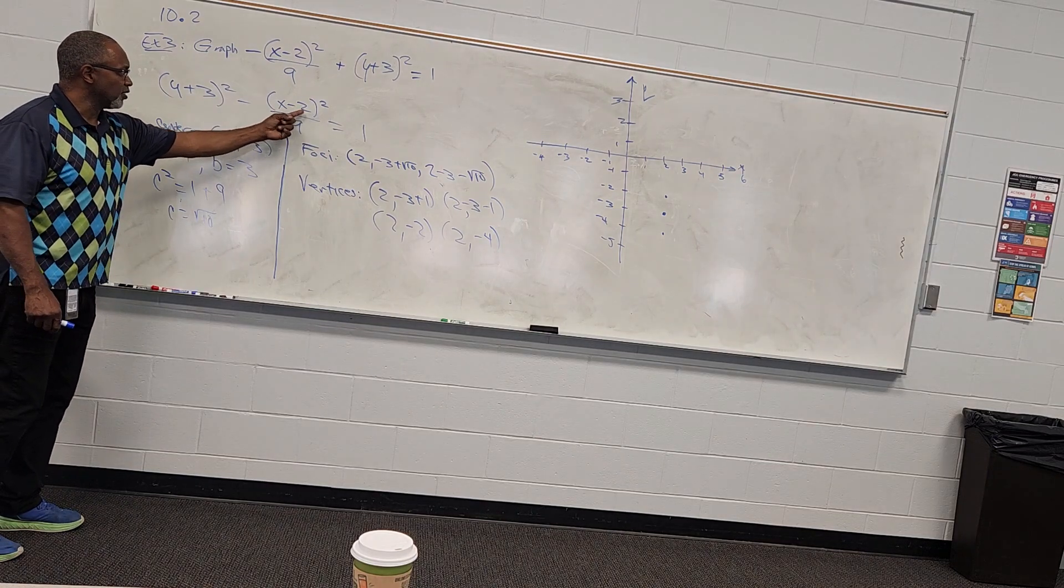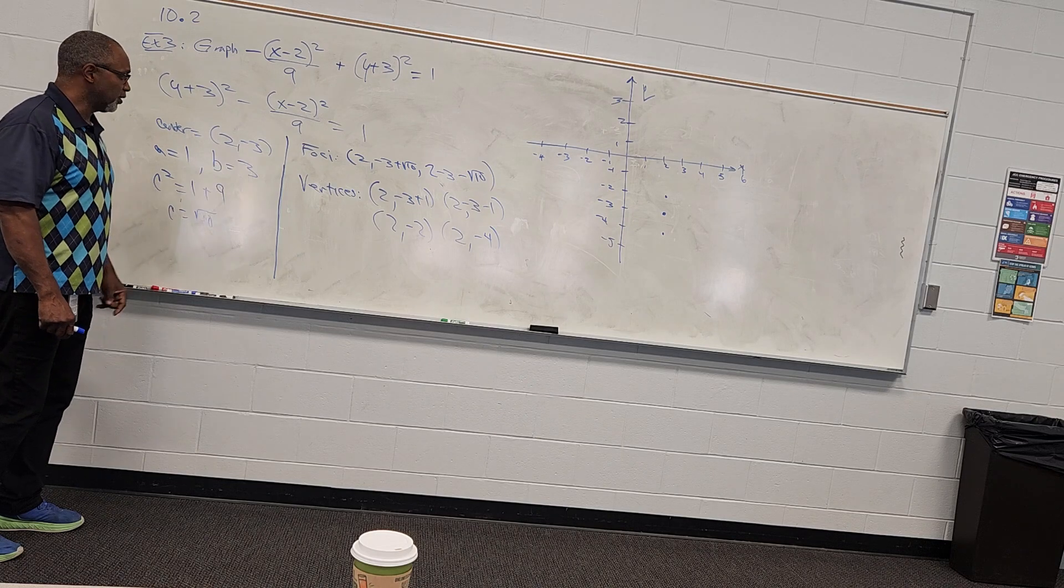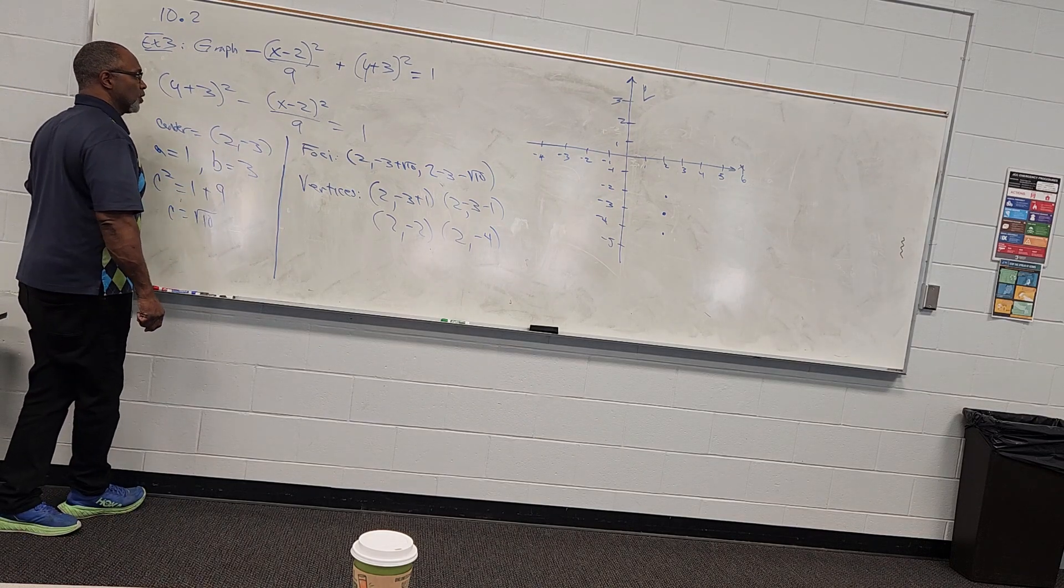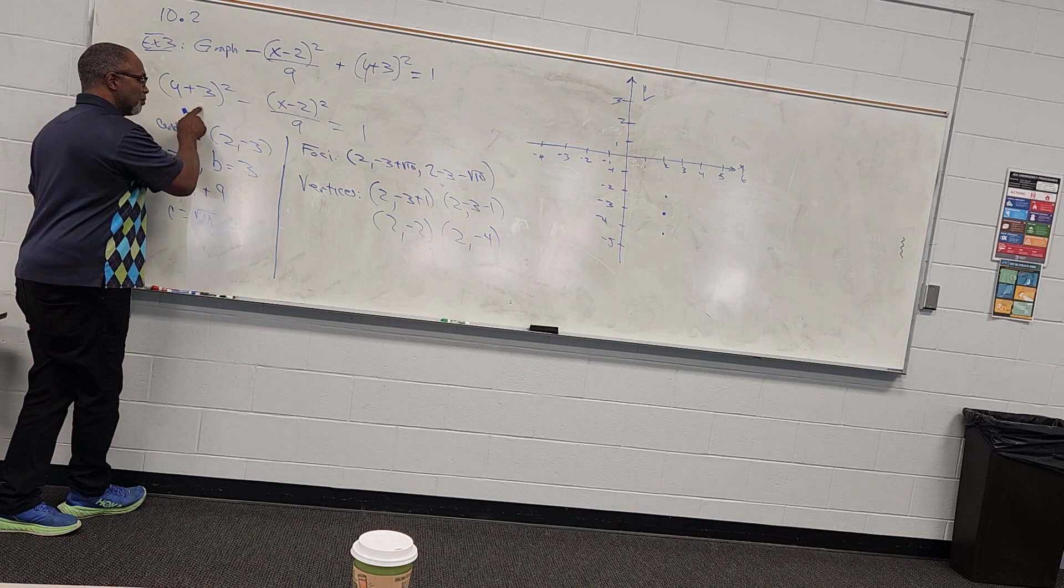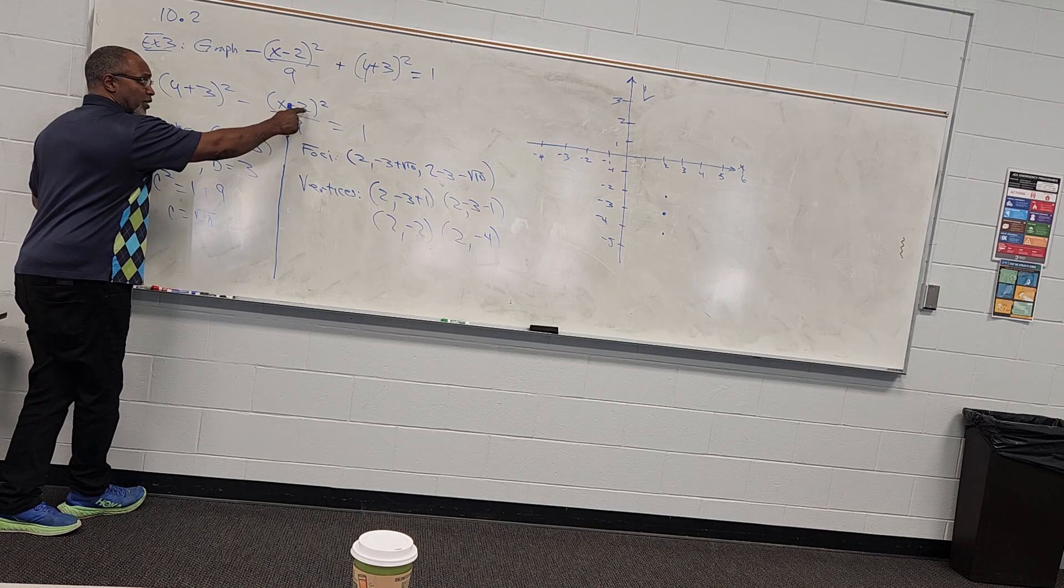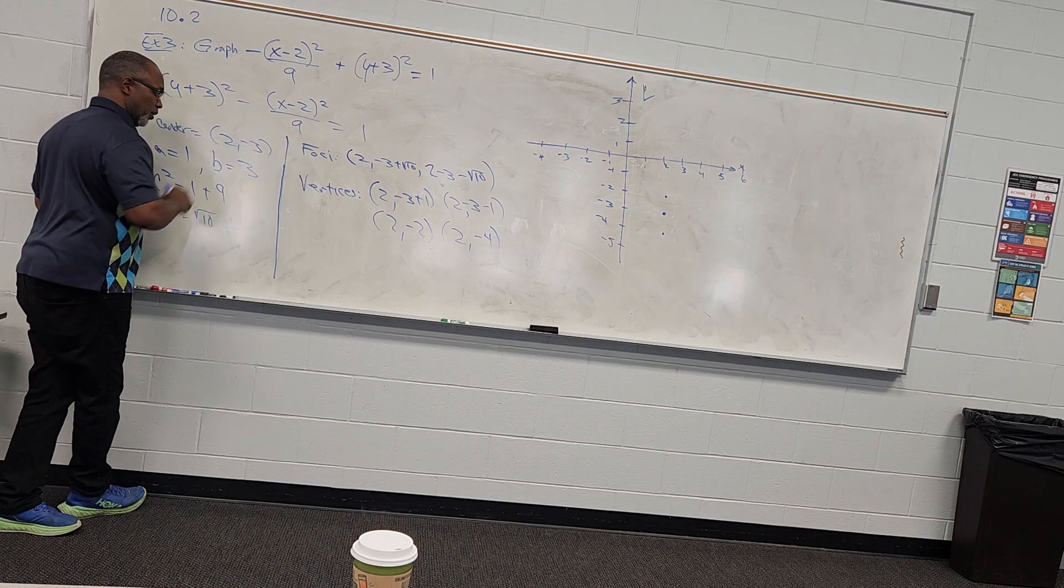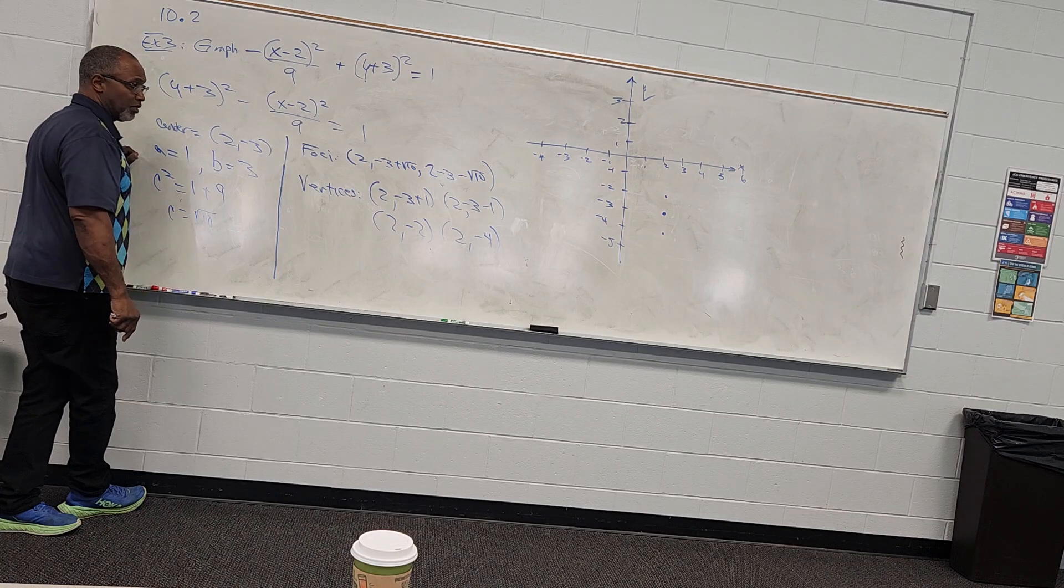The center would be at x minus h, so h is 2. y minus k, k is negative 3. So the center is 2, negative 3. The y term is always over a squared, so a must have been 1 since there's nothing here. The a squared must have been 1, so a is 1. x minus k squared over b squared, so b must be 3 since b squared is 9. I can use a and b to find c. c turns out to be the square root of 10.